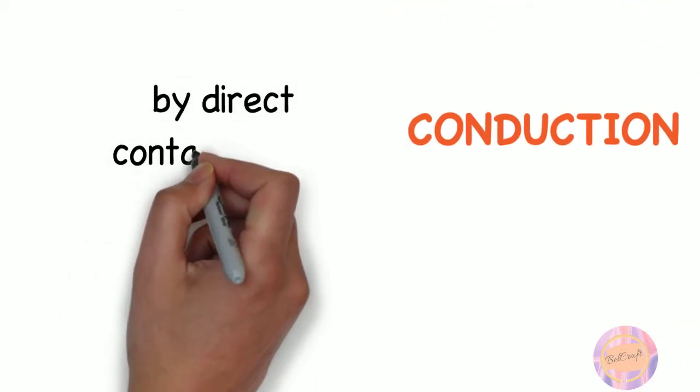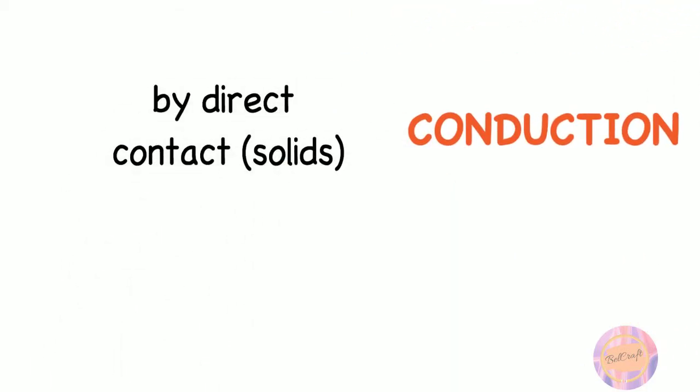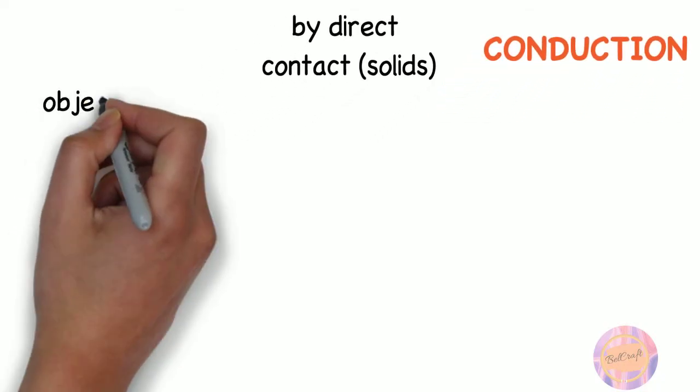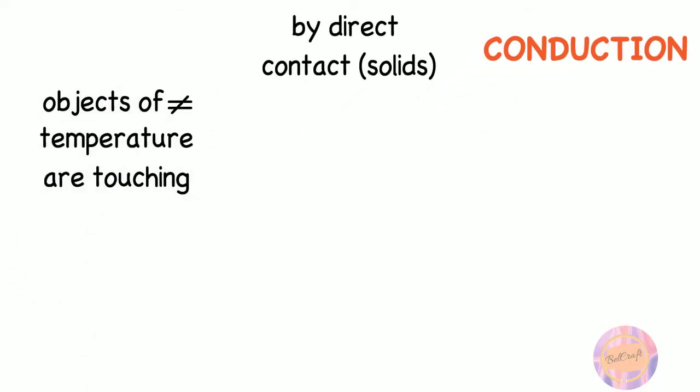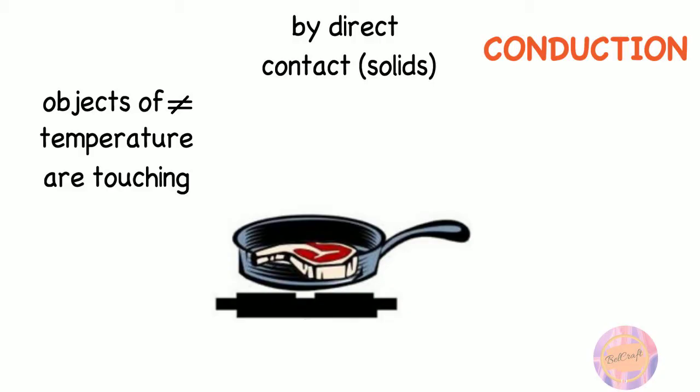Conduction is the flow of energy by direct contact in solids. It occurs when two objects of different temperature are touching, and the heat energy moves from the warmer object to the cooler one. In this case, from the pan to the steak.